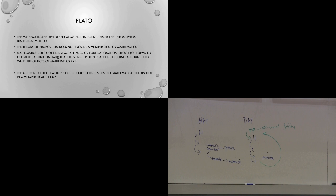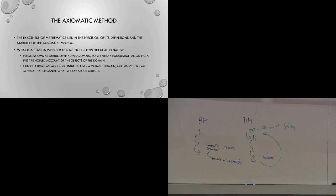Let's travel onward — I'm skipping a few thousand years. Now we want to say the exactness of mathematics lies in the precision and definitions and the stability of the axiomatic method. So what is at stake is whether this method is hypothetical in nature or not. And this brings us to the debate between Frege and Hilbert.